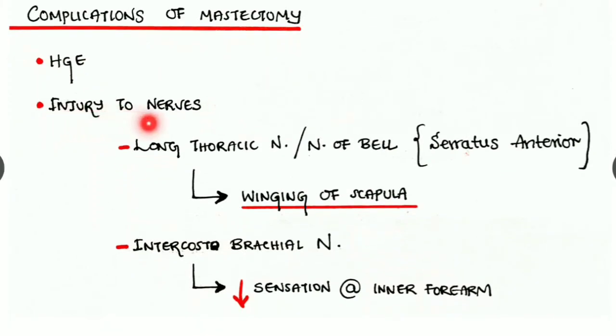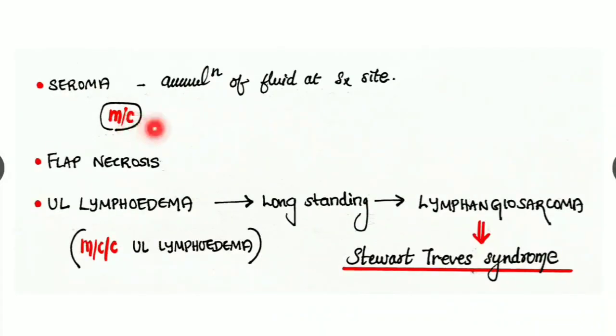Finally, let's look at the complications of mastectomy. Hemorrhage is a common complication, and then injury to nerves like long thoracic nerve or the nerve of Bell, which innervates the serratus anterior. Injury to this nerve causes winging of scapula. Injury to the intercostal brachial nerve causes reduced sensation in the inner aspect of the forearm. And the most common complication is seroma, which is accumulation of fluid at the surgical site. It can be solved by putting a simple drain. Then we can expect flap necrosis.